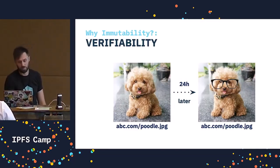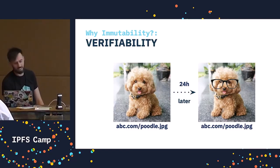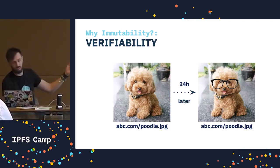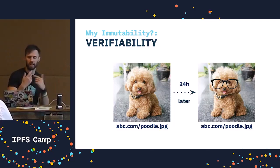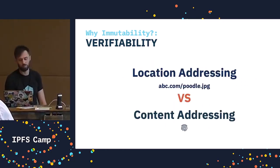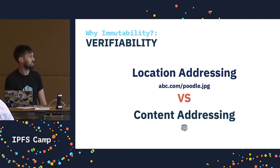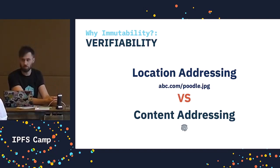In the web of today, I can put my poodle picture up at abc.com/poodle.jpg, and 24 hours later I can doodle on my poodle — add some glasses, make him look a little more sophisticated. The problem is that the content isn't inherently tied to the address. The content can change but the URL doesn't. So depending on when I access this poodle, it could be completely different. What we have on the web today is location addressing — it tells us where the data is stored but not much else. Content addressing, on the other hand, is where we use a hash to access the content, and it allows us to verify the content we receive is the content we asked for.